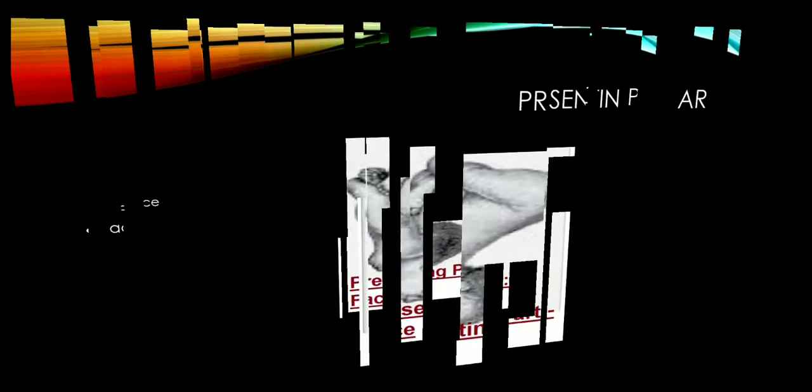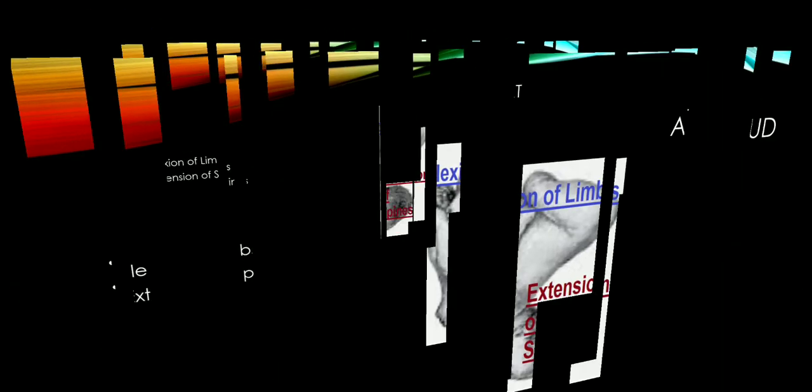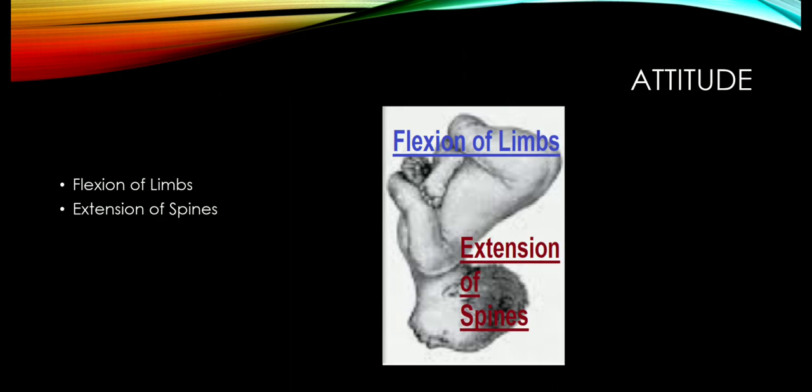The attitude — you have to understand this. Whenever we discuss the attitude, you have to remember that there is flexion of the limbs. Along with the flexion of the limbs, if we discuss the spine, the spine is extended. So there is extension of the spine and flexion of the limbs.